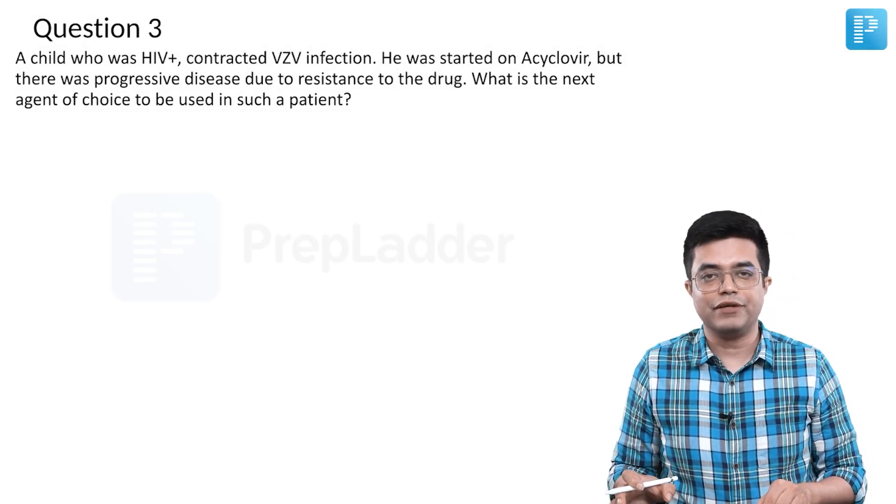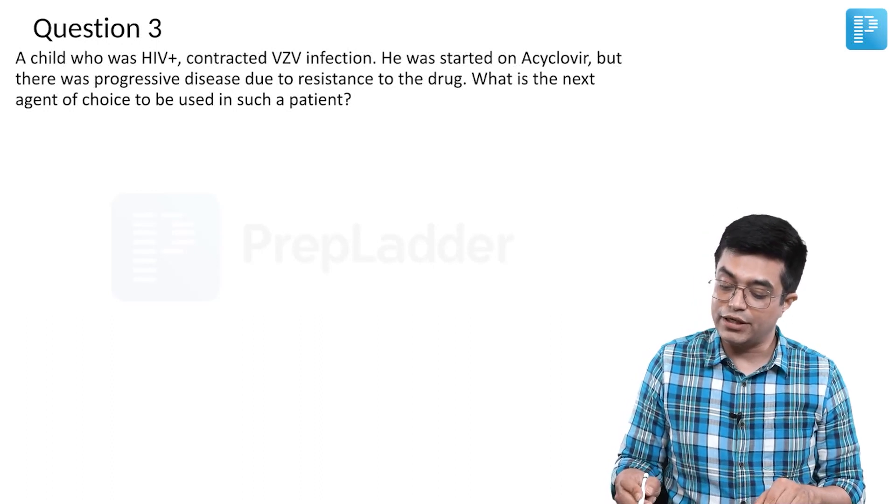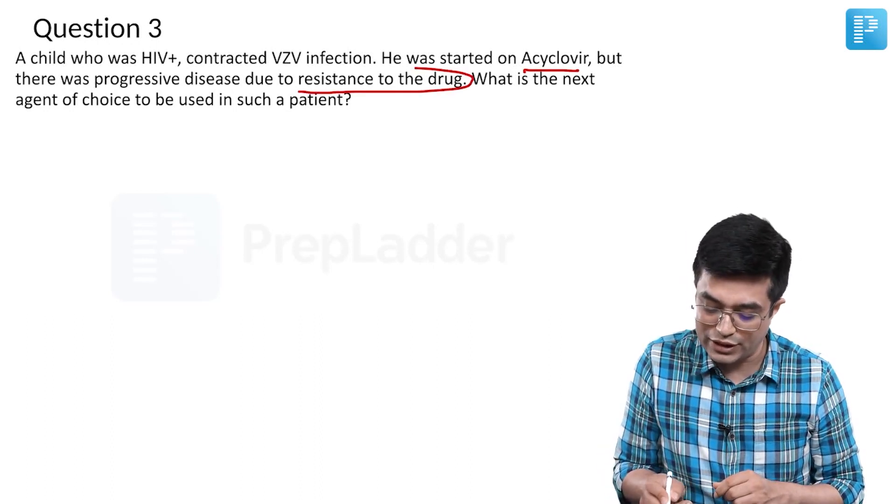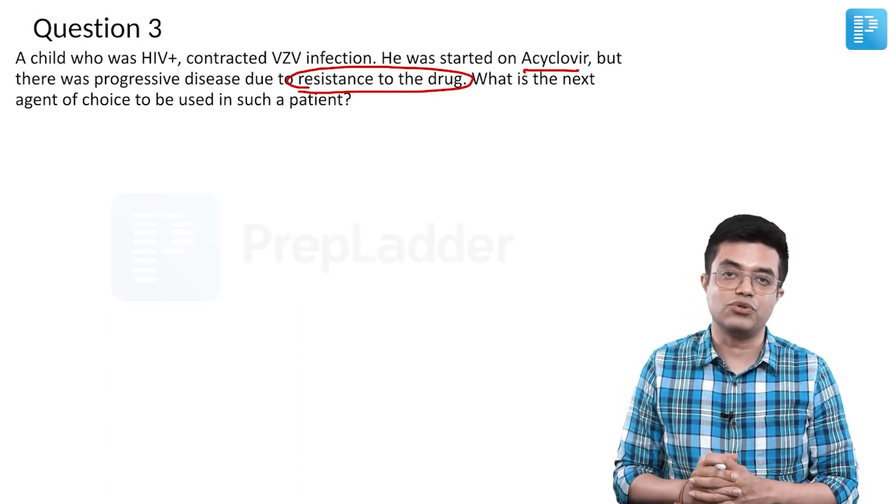A child who was HIV positive contracted varicella zoster virus, that is chickenpox infection. He was started on acyclovir but there was progressive disease due to resistance to the drug. So there is acyclovir resistance. What is the next agent of choice to be used in such a patient?